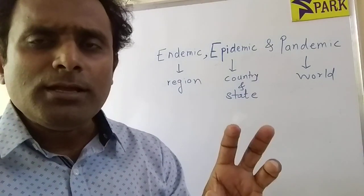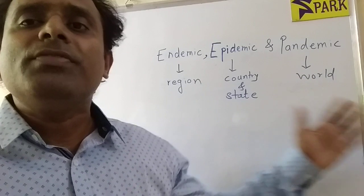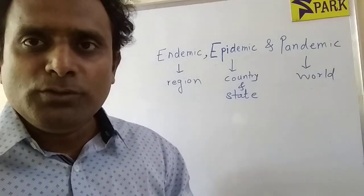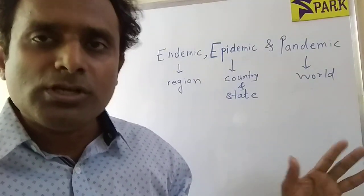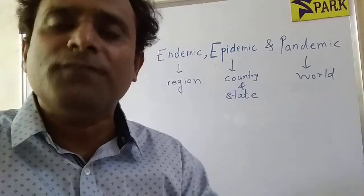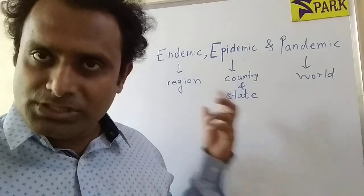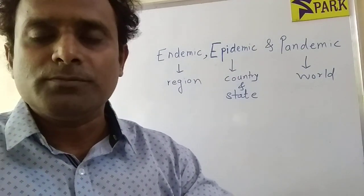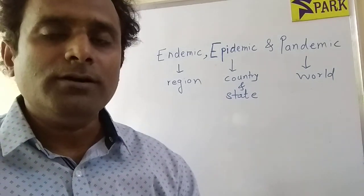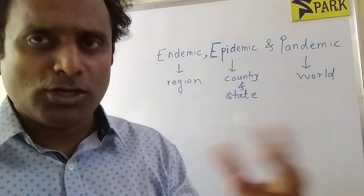Remember that endemic is something we commonly observe — it is not an outbreak. Epidemic and pandemic, on the other hand, are outbreaks that spread very fast. So when I use epidemic figuratively for crimes, I am referring to crimes which have increased very fast all over the country. If there is an outbreak of crimes restricted to a country or state, I use the word epidemic. Whereas discrimination against women is a common problem — not an outbreak — so I say it is endemic.